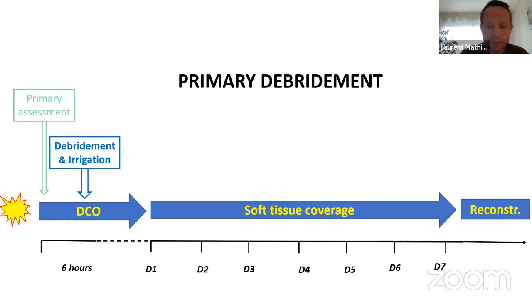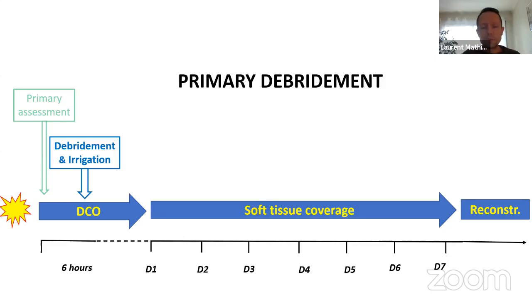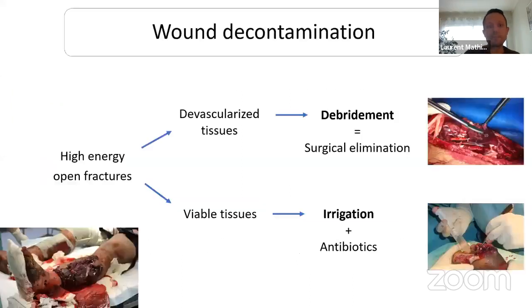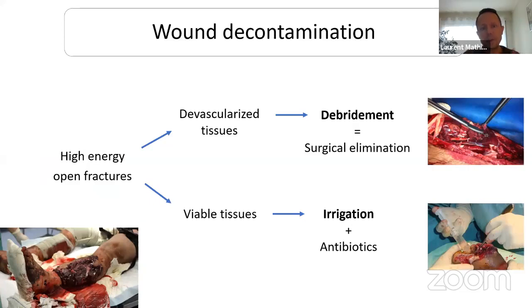This is the primary assessment: is the wound already infected? Is there a soft tissue defect? What are the bone injuries? Then you move to the theater and start surgery. In war surgery you have mostly high-energy open fractures combining devascularized and viable tissue. To perform appropriate wound decontamination you must act on both. For devascularized tissue the only way to decontaminate is to remove it — debridement with wound incision and wound excision. For viable tissue you must conserve them and decontaminate by performing generous irrigation combined with antibiotic treatment.